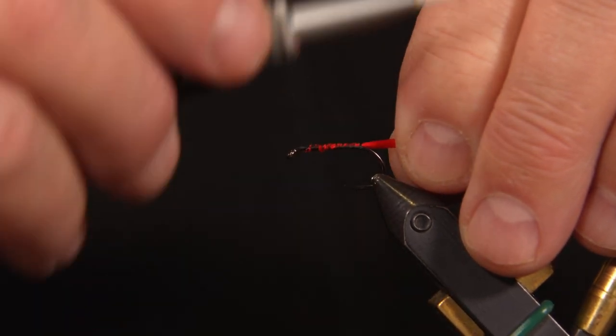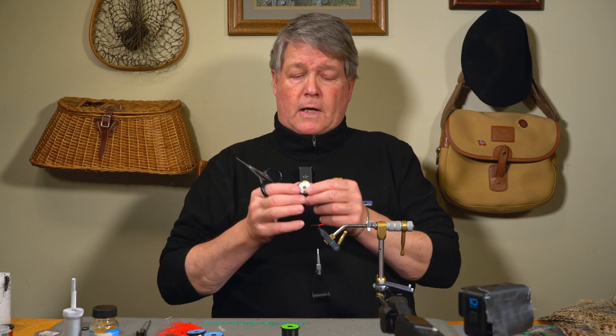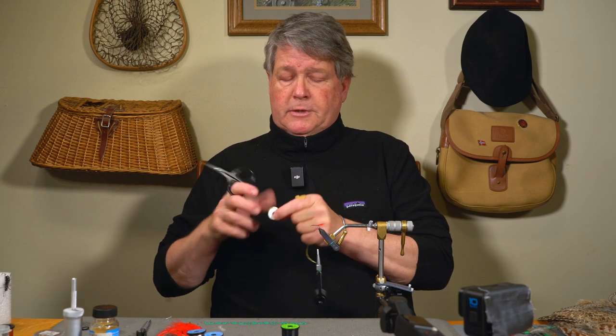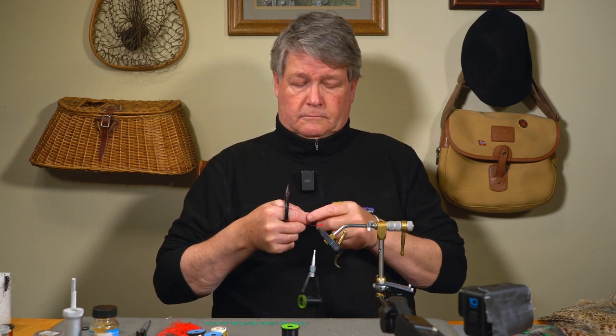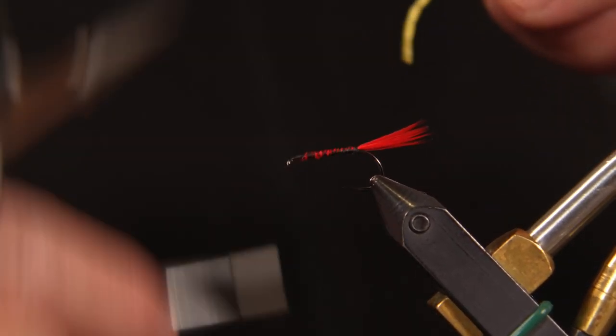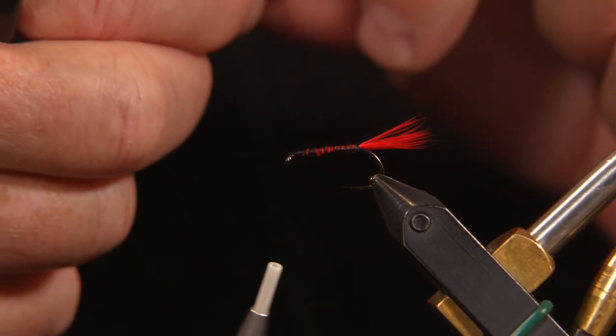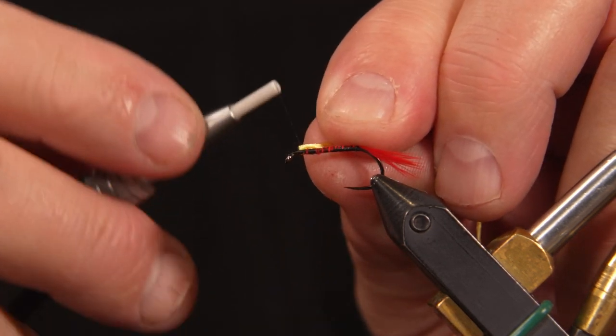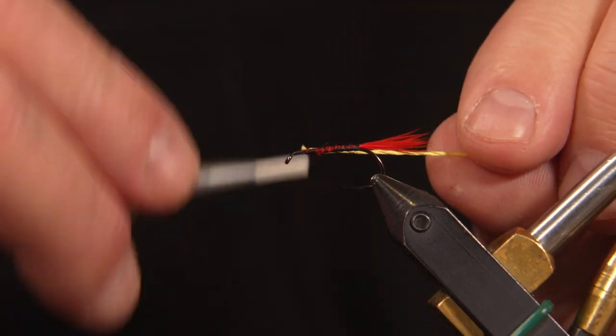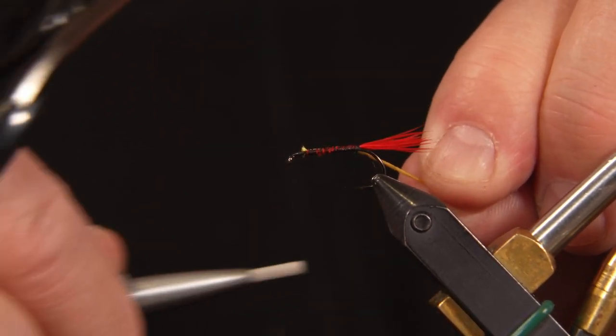I'm wrapping back to the tying point of the tail. I take my yellow floss. I'm wrapping forward just so I can even up that body. My tie-in point for the floss is forward. Pull it into shape, wrap back to the bend. And that ensures that I get a nice even body out of it.